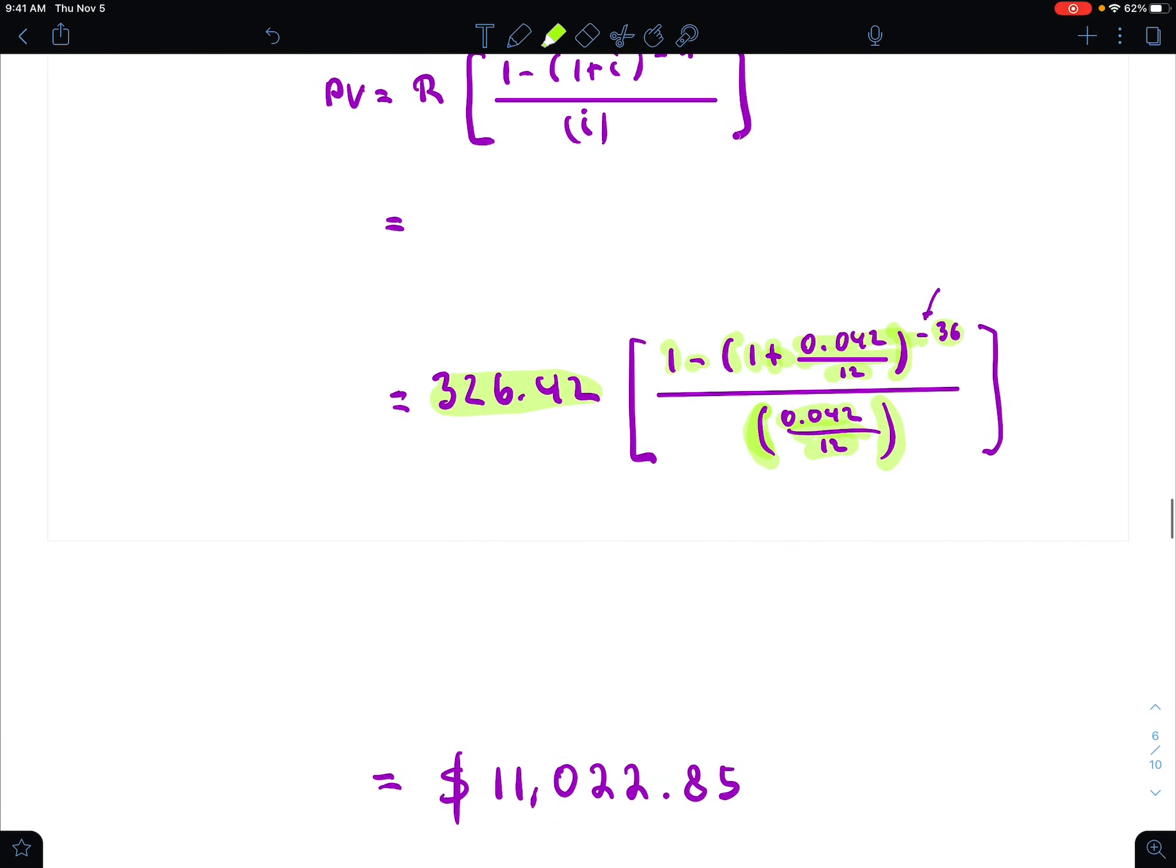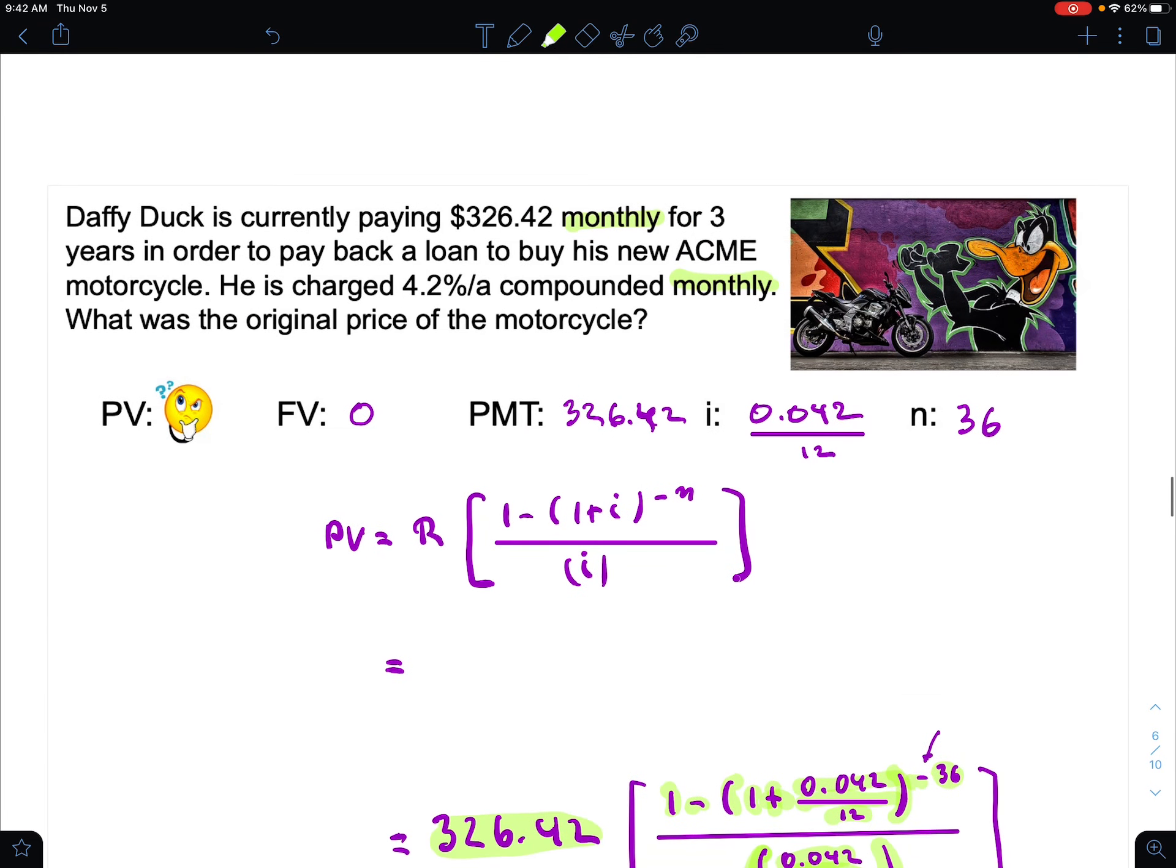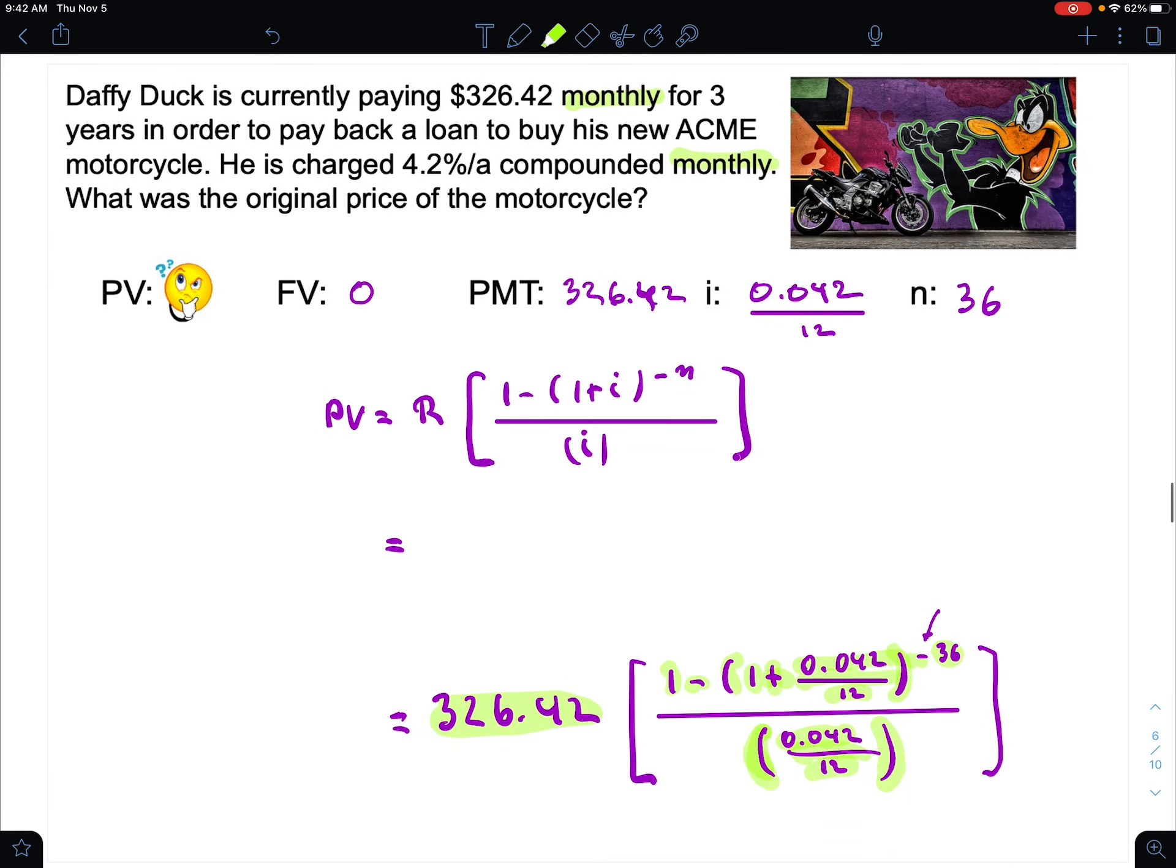So that's how much money Duffy Duck borrowed to get his bike. That might not be the price of the bike—he probably put some money down—but that's how much money he's paying back at $326.42 per month.